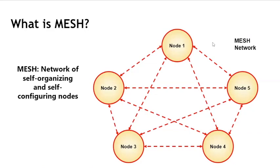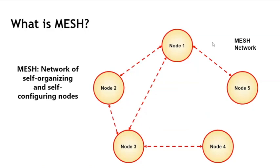The advantage of having a network of self-organizing and self-configuring nodes is that it's very robust. If any part of the network goes down — for example, if node 4 lost its direct connection to all the other nodes except node 3 — it can still contact all the other nodes on the network, including node 5. It'll have to go through one of the other paths, but the node itself does the calculation of how to get the traffic there. That's what makes it so powerful and fun to use.